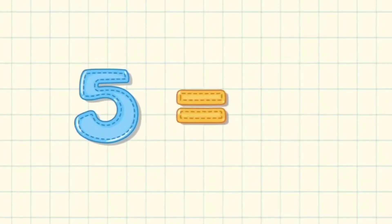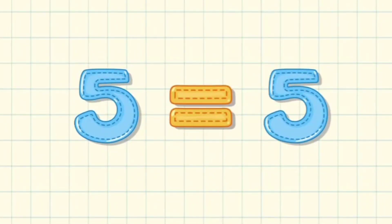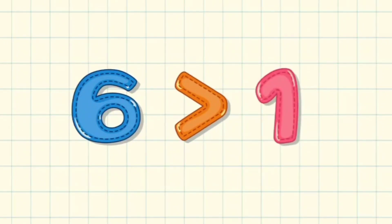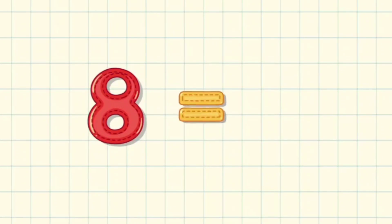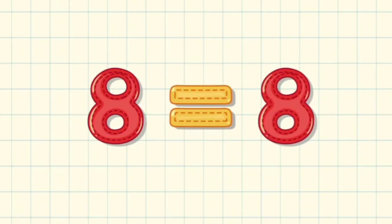Hello friends. 5 is going to 5, the number is same. 6 is greater than 1. Next, 8 is going to 8, the same number.